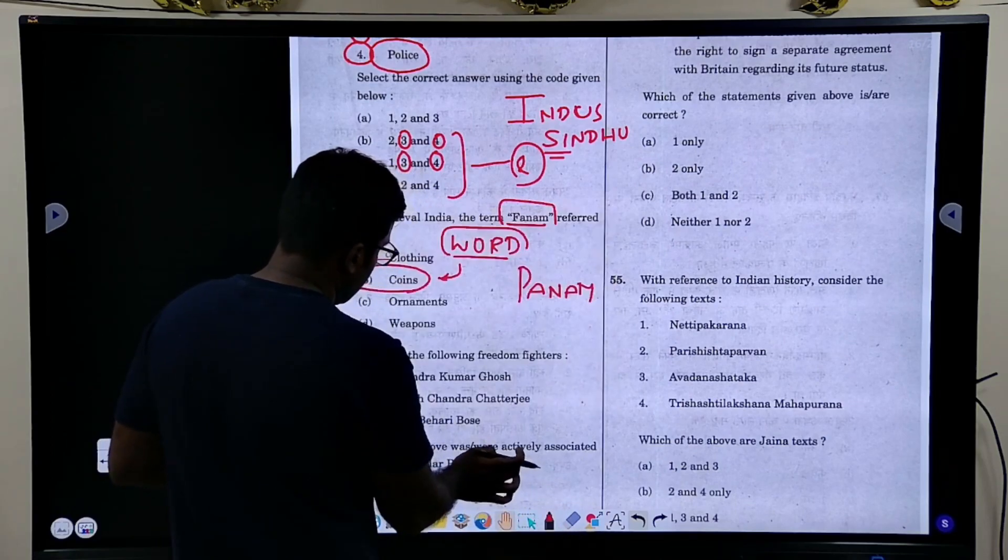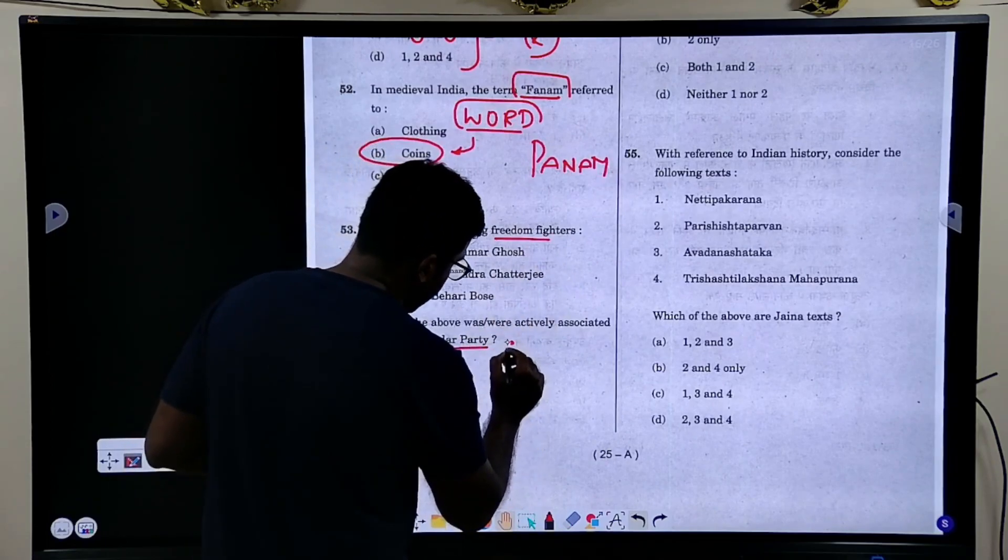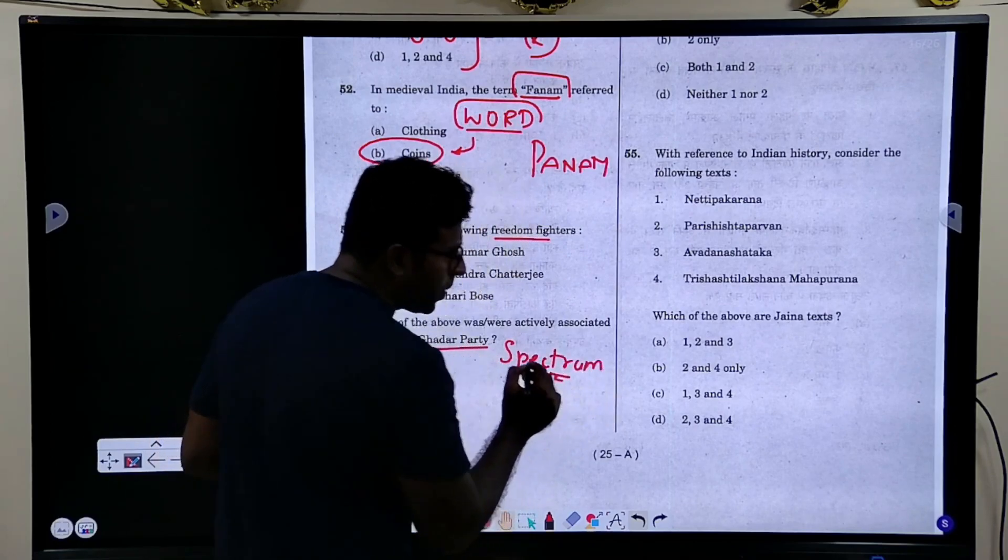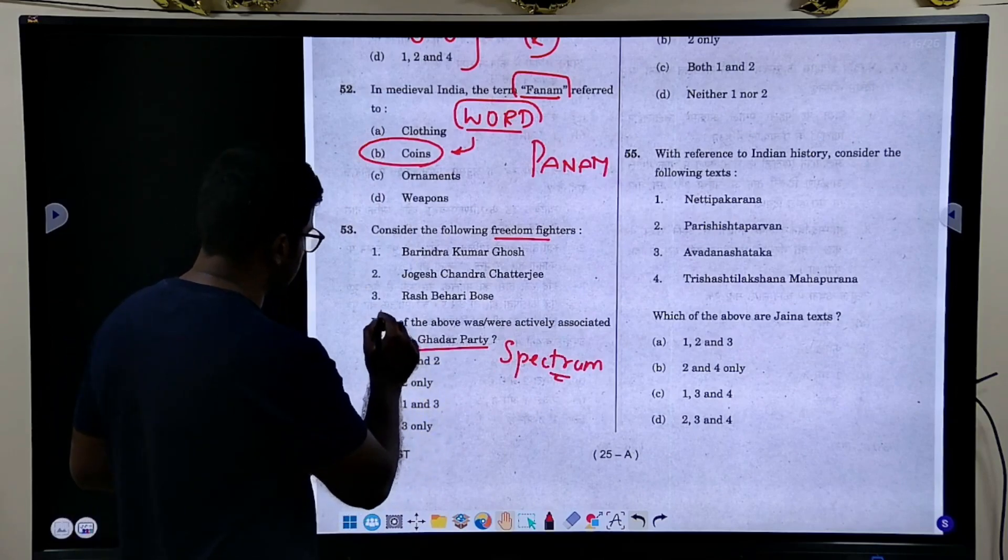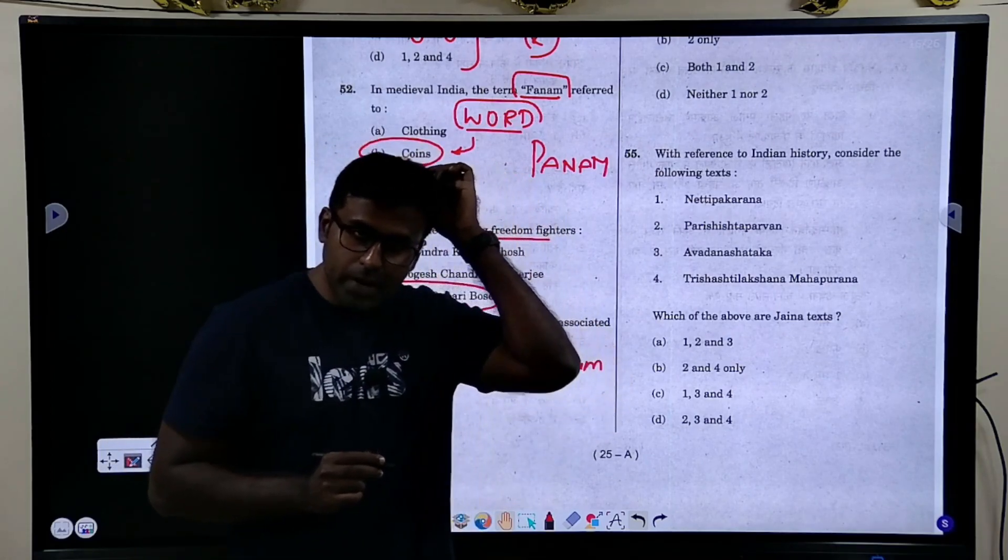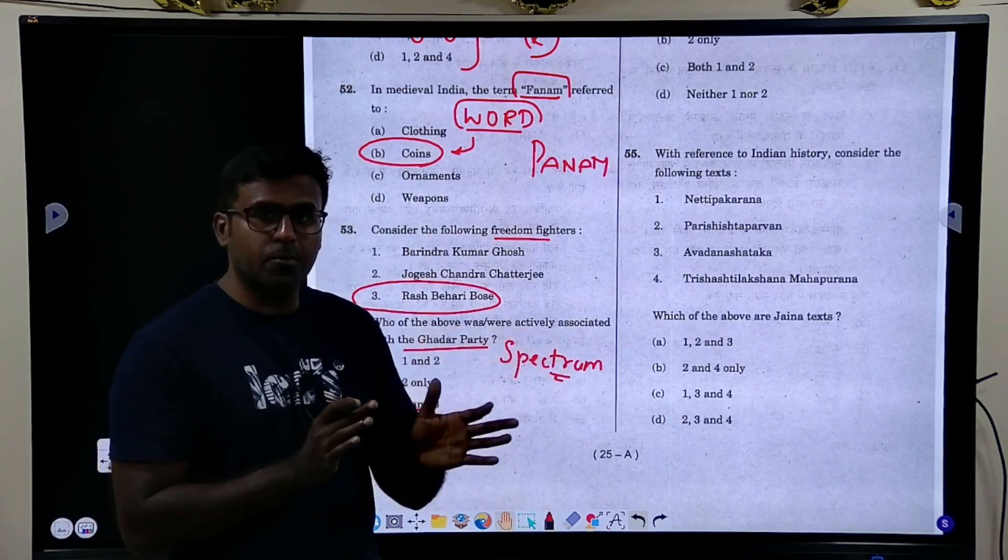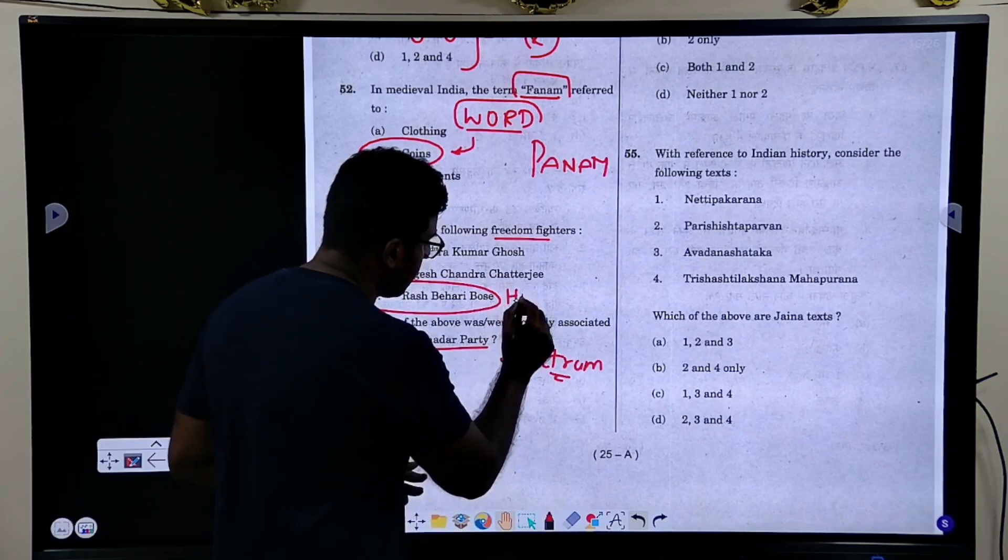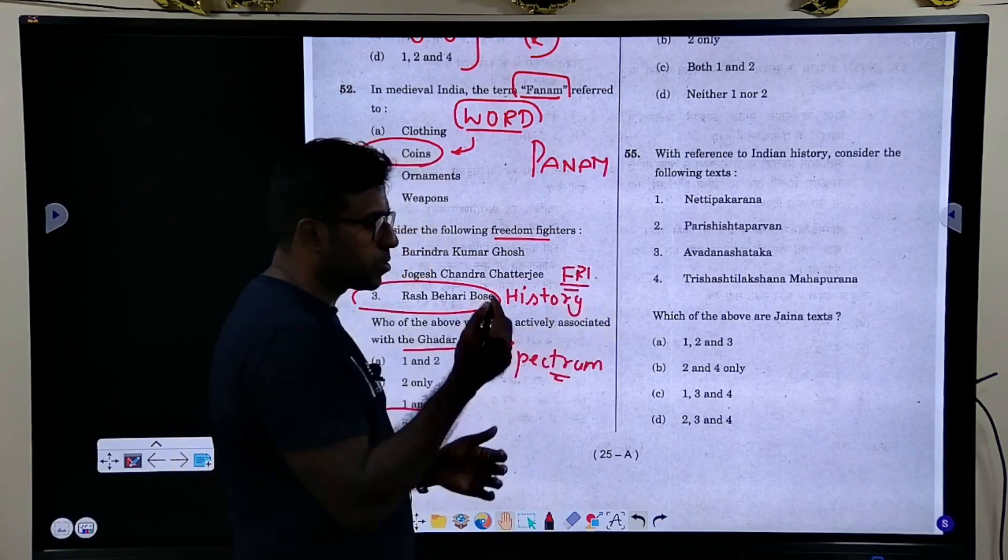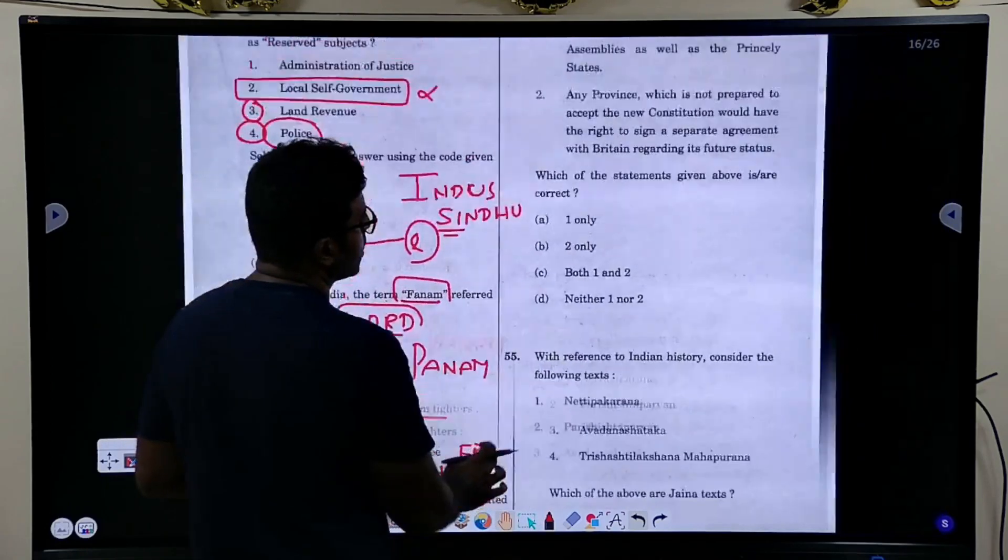Next, which of the following freedom fighters. This question, Ghadar party, this question is in spectrum. You should always check the table in spectrum, always. Table of important people in the parties. You should check because inside the hall, you will not be able to find answers for every question, especially questions like this. You have to revise one day before, two days before. Keep history for revision in the last moment so that you will revise all these names and you will not forget it inside the hall.